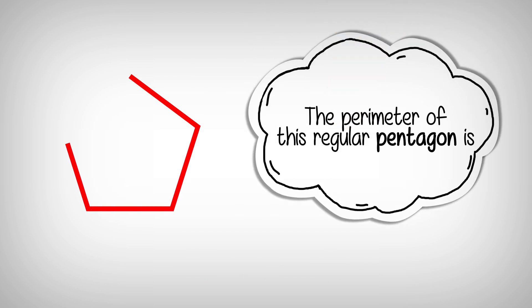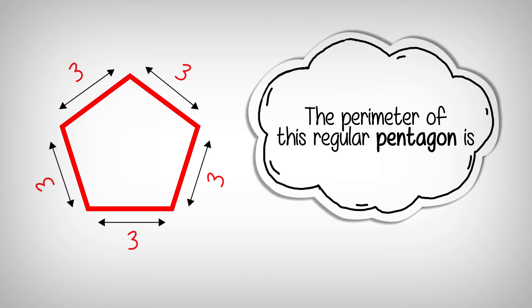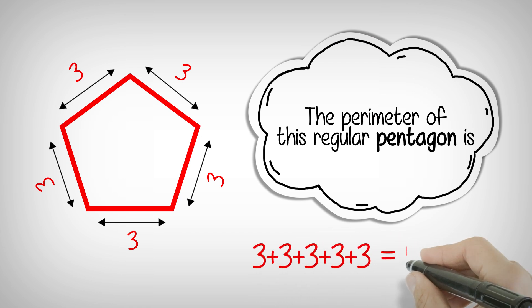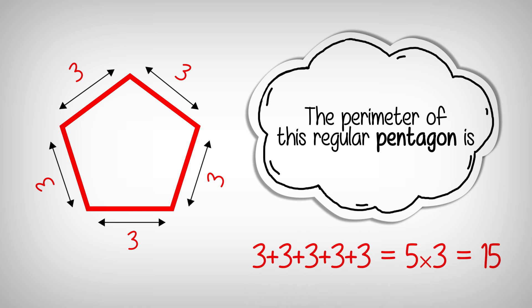The perimeter of this regular pentagon is 3 plus 3 plus 3 plus 3 plus 3, which is the same as 5 times 3, which equals 15.